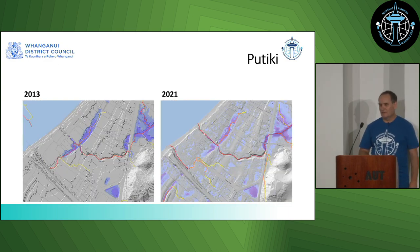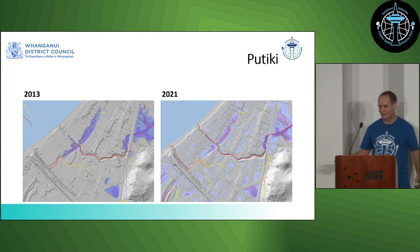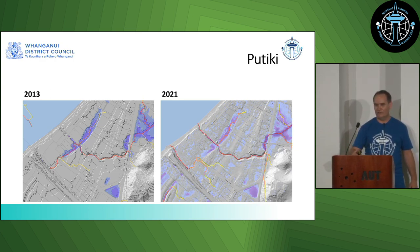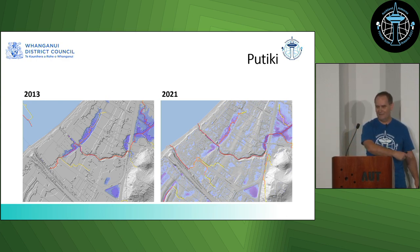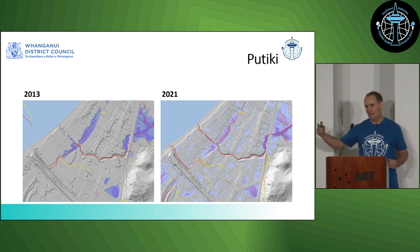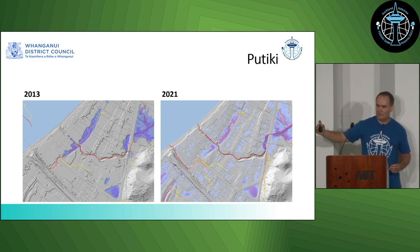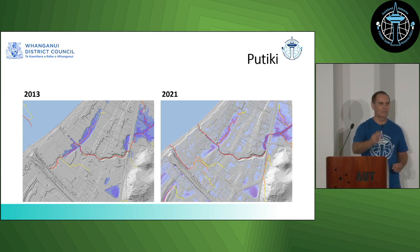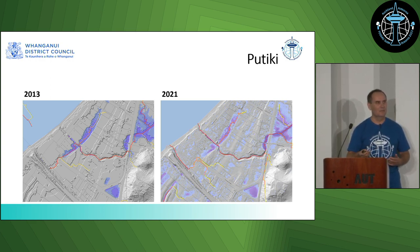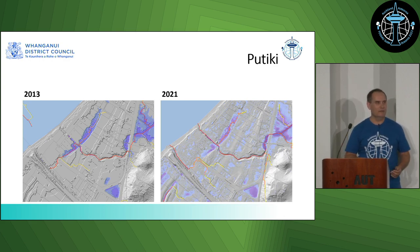Here are some really interesting before and after examples. In Putiki in 2013, there's a big red line that kind of ends at a bank and never actually reaches the river. The 2013 overland flow paths were good but not necessarily great. In our version, the overland flow path actually punctures the road where it should and then comes out to the river. So straight away we were seeing much better results than what we'd had previously.